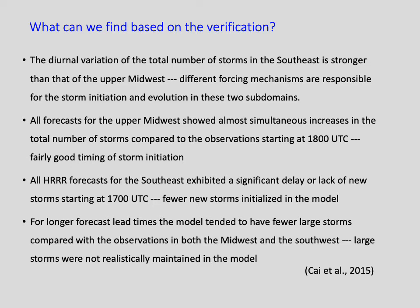What can we learn from the verification results? Storms in the upper midwest are dominated by synoptic-scale forcing, which often leads to large and organized precipitation systems. In the southeast, however, storms are often scattered and isolated because they are driven by local diurnal heating. Model descriptions of such physics still need to improve. We also need to figure out why the model failed to maintain large-sized storms. This is a good example of what we can learn from verification.